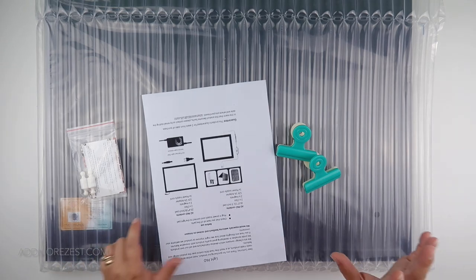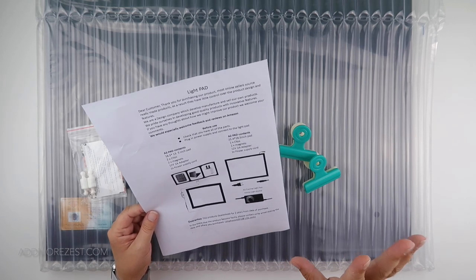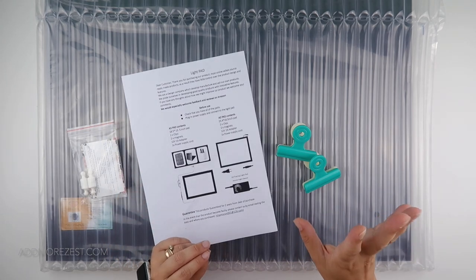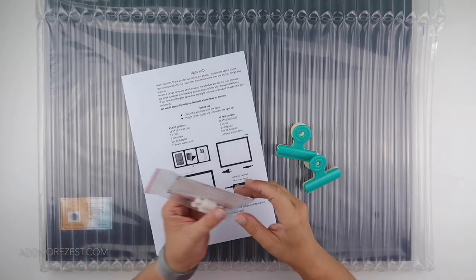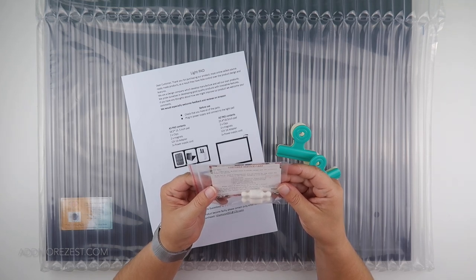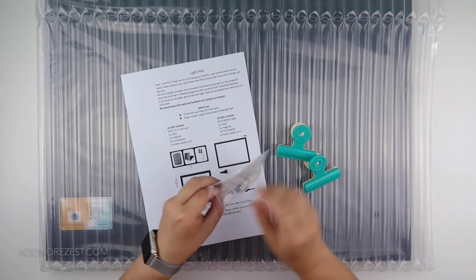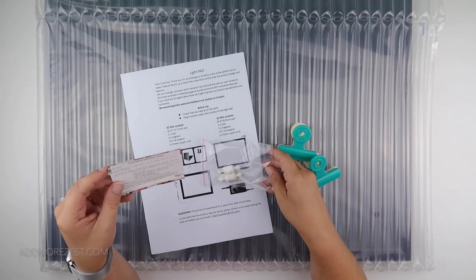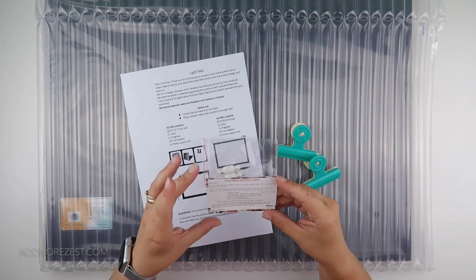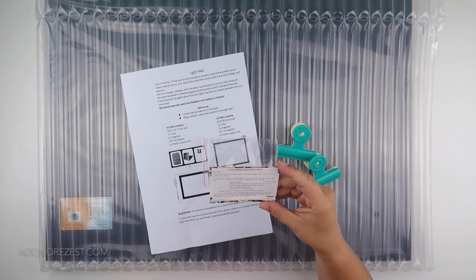It's come in an extremely thick box but this is a light pad. This is no ordinary small light pad, this is an A2 light pad so this is big. We do have a customer service card. As a reliable seller we always pursue to provide customers with 100% satisfactory products and services. If you find any damage or dissatisfaction contact us immediately. They have Amazon message, Facebook group, Facebook page, email and Etsy.